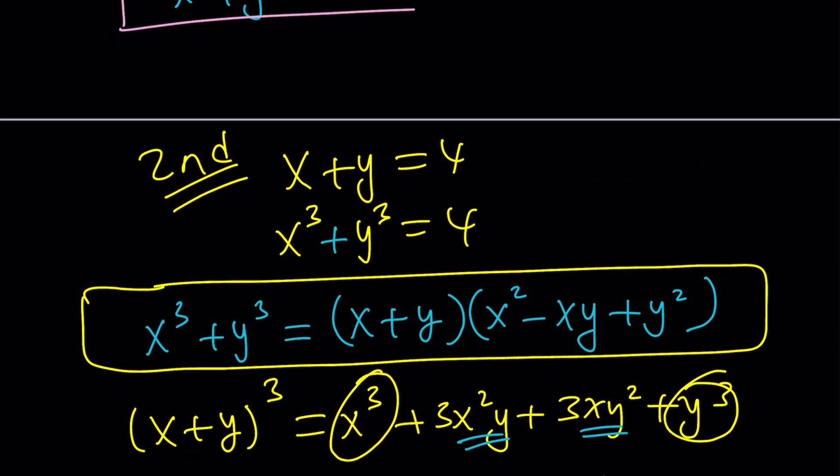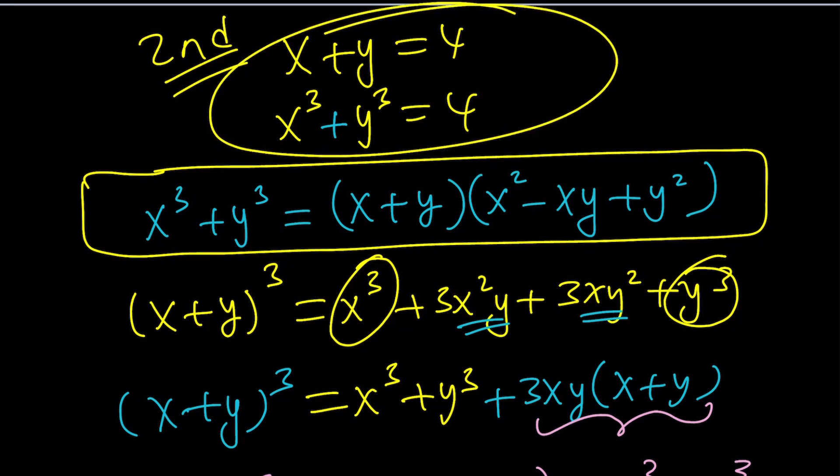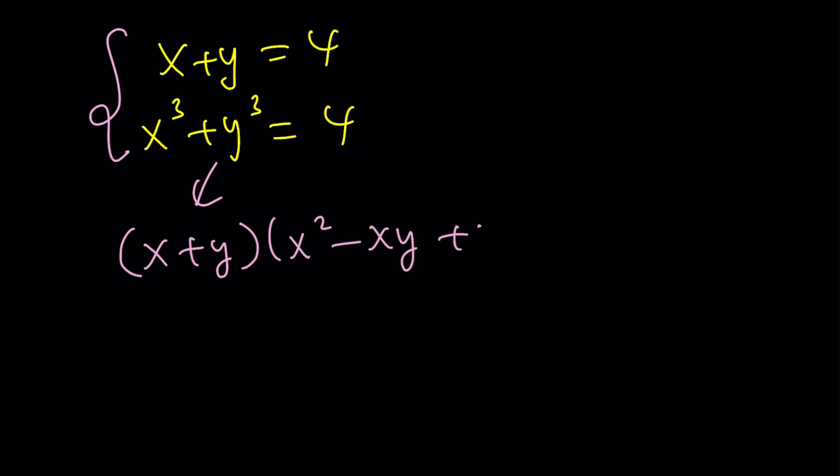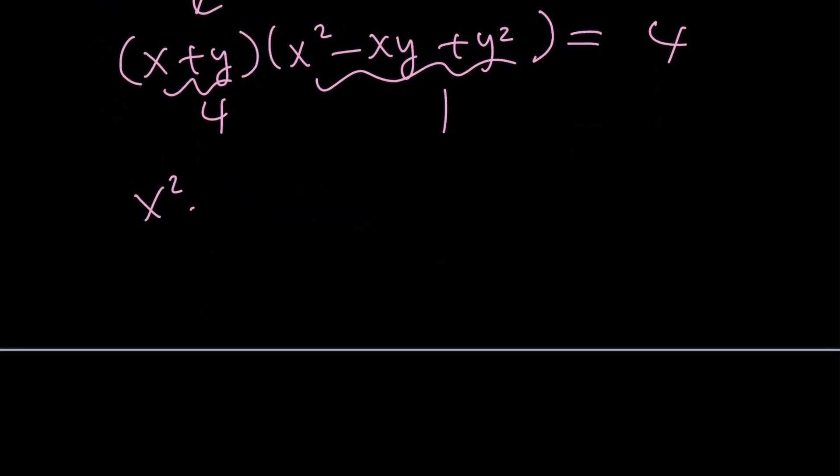So now, what am I going to do with that? I'll take these two equations and use the identity. x plus y equals 4. x cubed plus y cubed equals 4. So let's solve this system by using that identity. This will be factored as x plus y times x squared minus xy plus y squared. And that's also 4. Now we know that this is equal to 4. So this is going to become 1 by division. But how is that going to help me? I don't have x plus y. I only have x, y and x squared plus y squared.